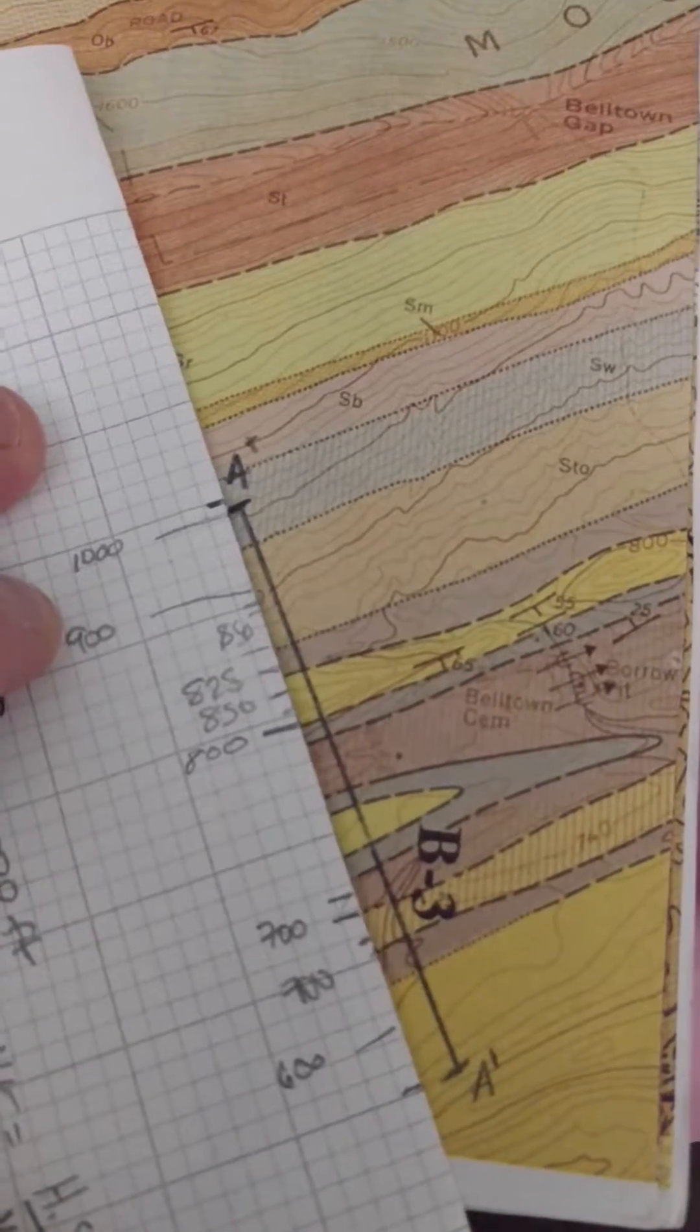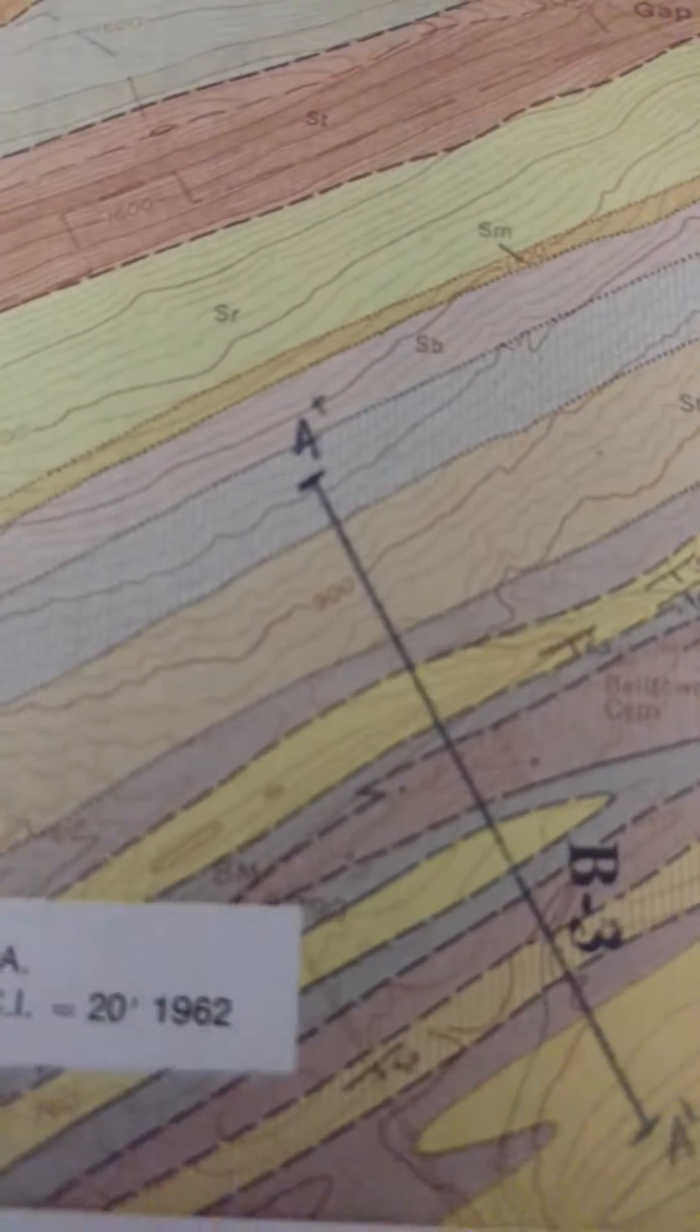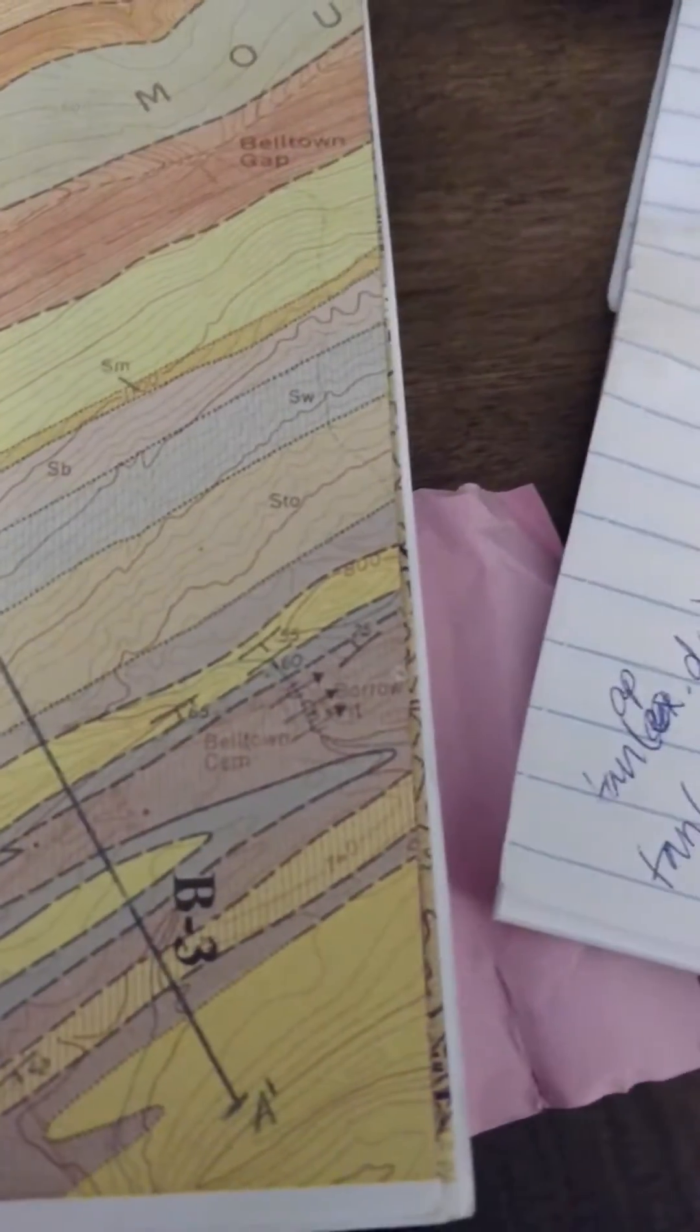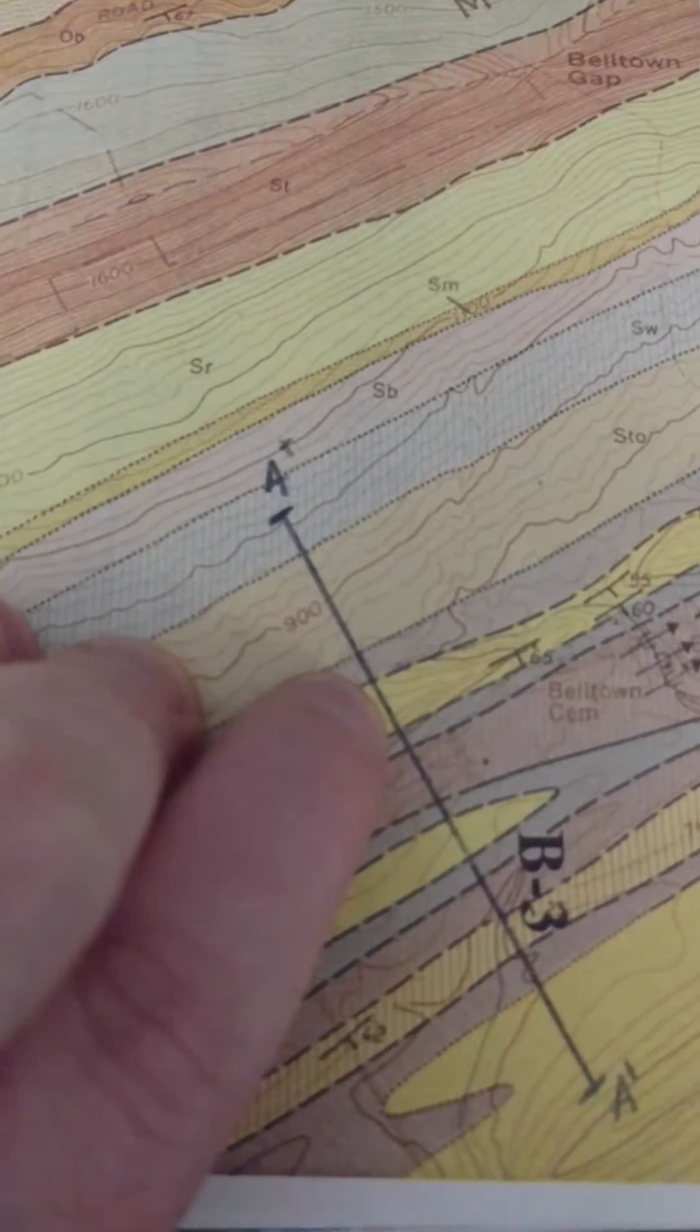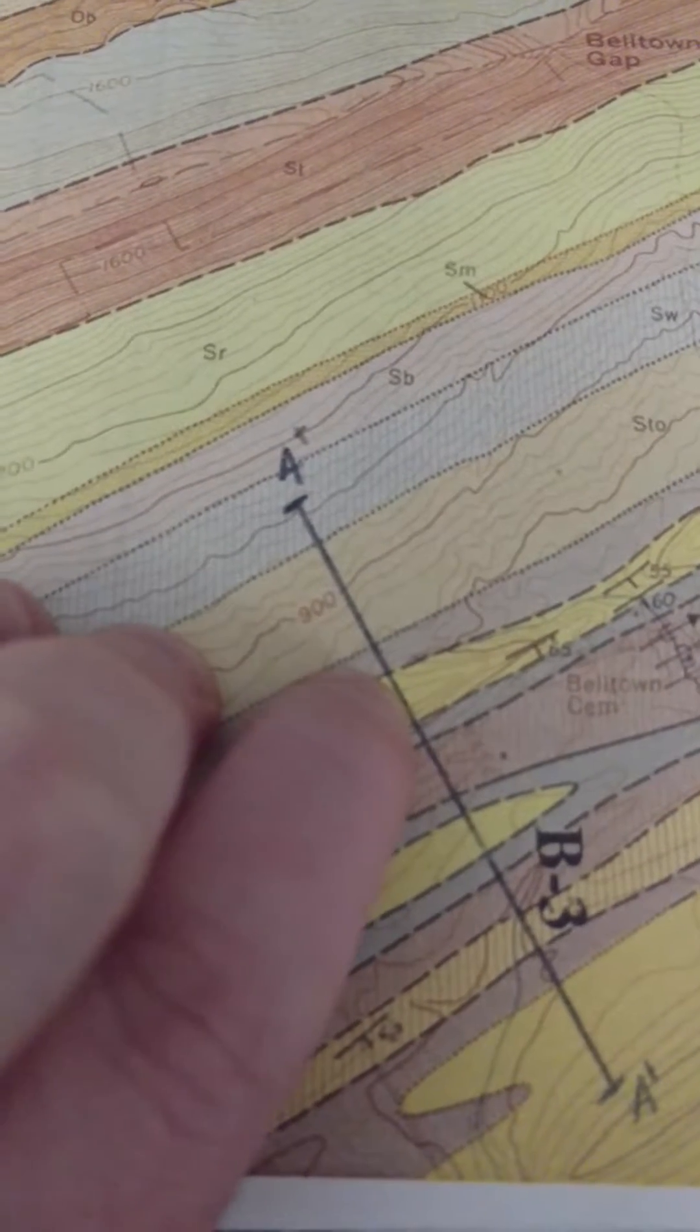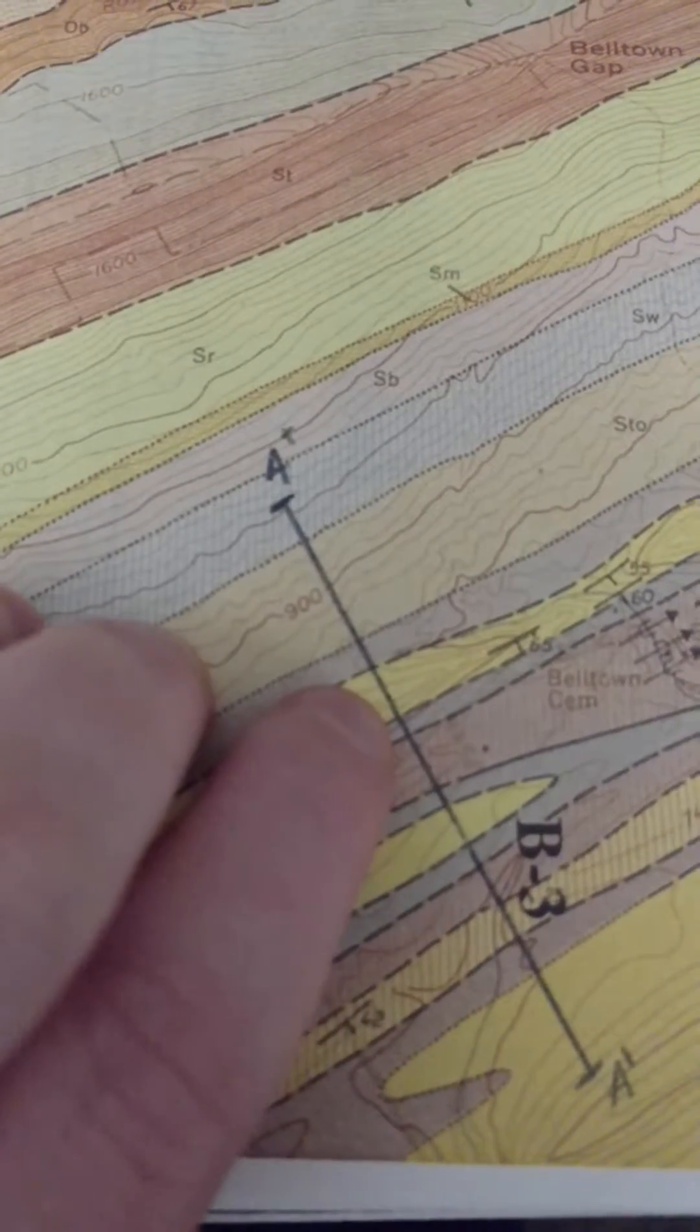Now there are some things that you want to look for when you're doing this. Keep in mind whatever your contour interval is here, it's 20 feet, so that'll help you count out what you're doing. But also look for things like this, where you wouldn't want to make this tick mark and say we're going down 20 feet, because it loops around and it's actually the same contour interval.